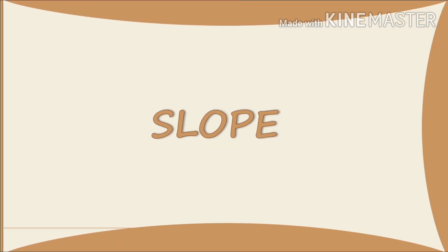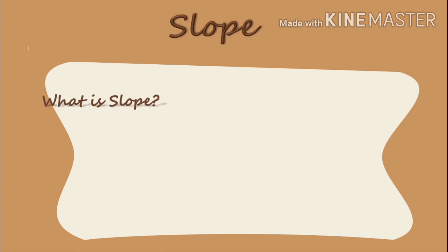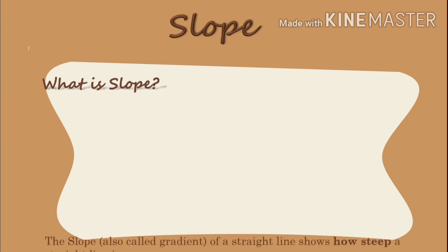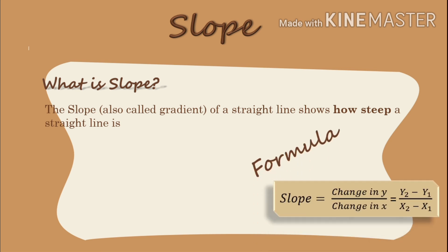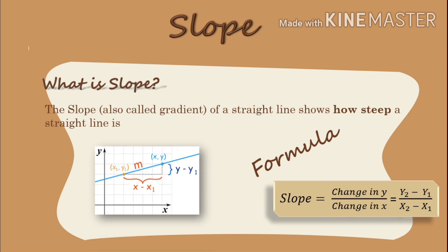Slope. What is slope? The slope is called the gradient of a straight line, and shows how the shape of a straight line is. The formula: slope equals change in y divided by change in x, which equals y2 minus y1 divided by x2 minus x1. This is a picture of slope.